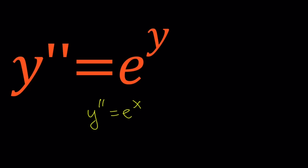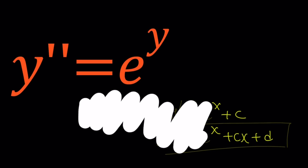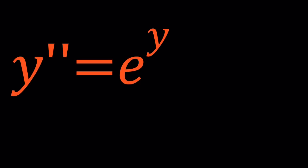First of all I want you to notice a couple things. We have y double prime, the second derivative of y with respect to x, equals e to the power y. So y is kind of like a function of x and we don't have e to the power x on the right hand side. Notice that if we had y double prime equals e to the x, the solution of this would be fairly easy. But we have e to the power y which complicates things a great deal.